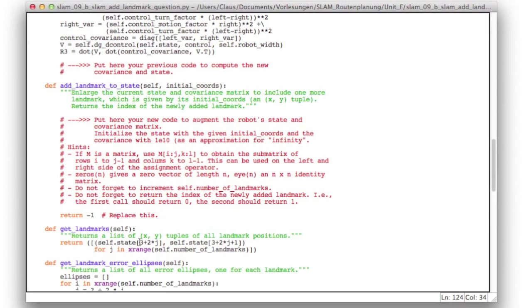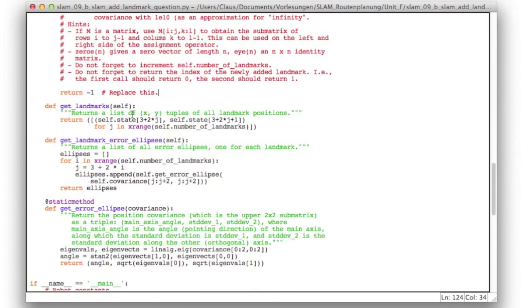And I added a few other functions. The get landmarks function will return a list of all landmarks. And the get landmark error ellipses will return a list of error ellipses, one ellipse for each landmark that is in the current state.